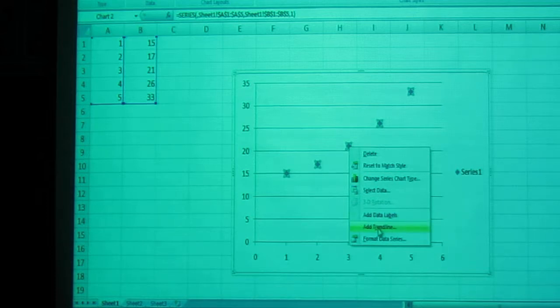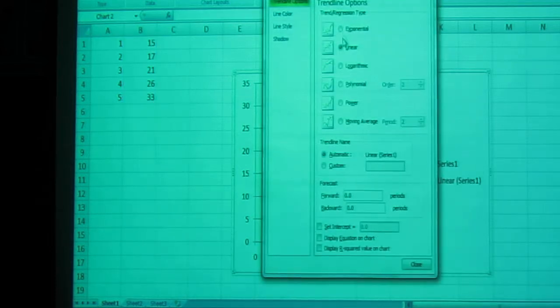When it says Add Trendline, that's a line of best fit or a regression, it gives us a bunch of options. But this is a video about line of best fit, so we'll leave it as linear.